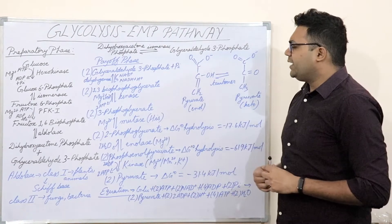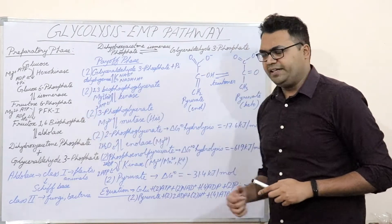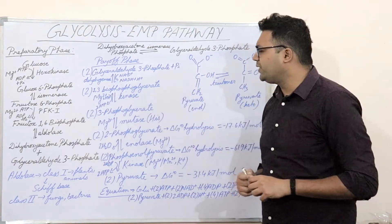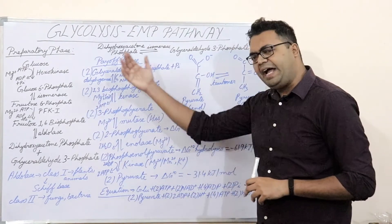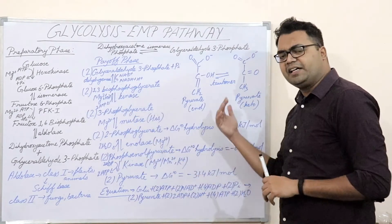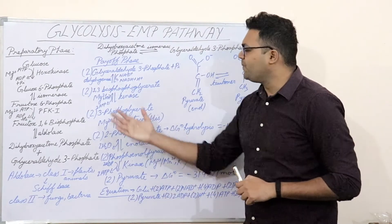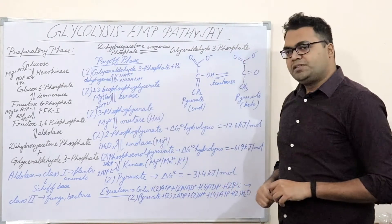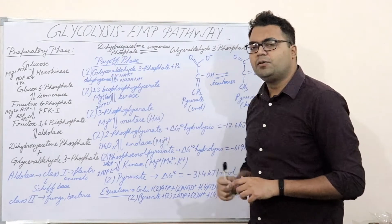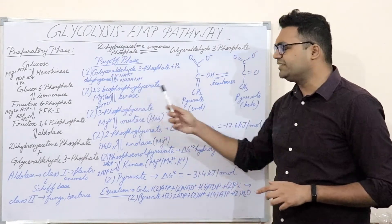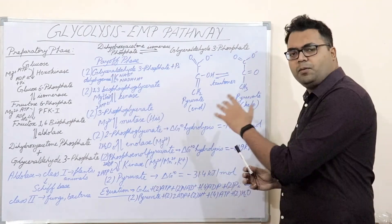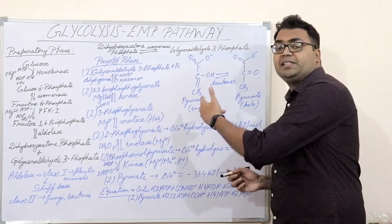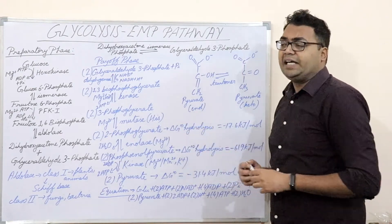Now let us get down to the molecular detail of glycolysis. The entire reaction occurs in the cytosol or cytoplasm. The glycolytic molecules — number one being glucose — and all these enzymes are soluble enzymes present in the cytosol only.